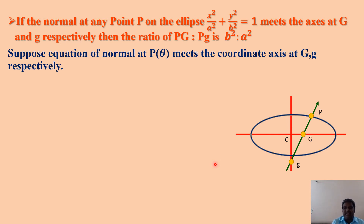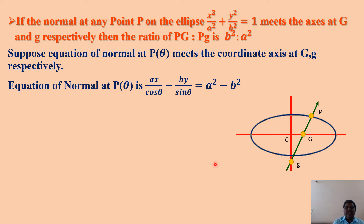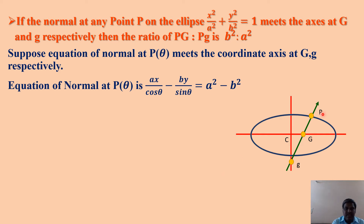The normal meets the x-axis and y-axis respectively. The equation of normal at P(θ) is: ax/cosθ − by/sinθ = a² − b². Your target is to show the ratio PG to Pg. Capital G and small g are the points of intersection where the normal meets the coordinate axes. We solve the normal equation with the x-axis and y-axis to get the coordinates of capital G and small g.